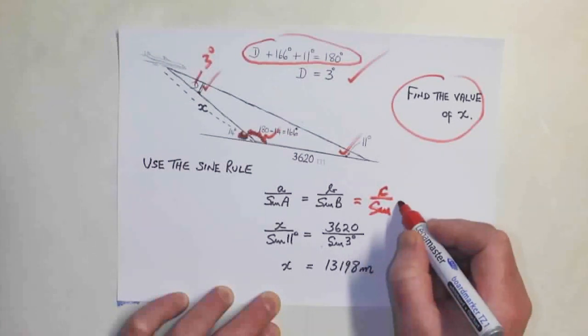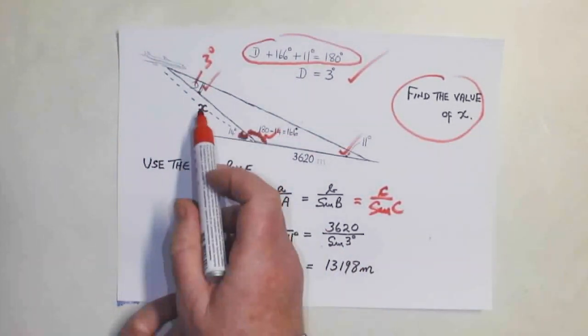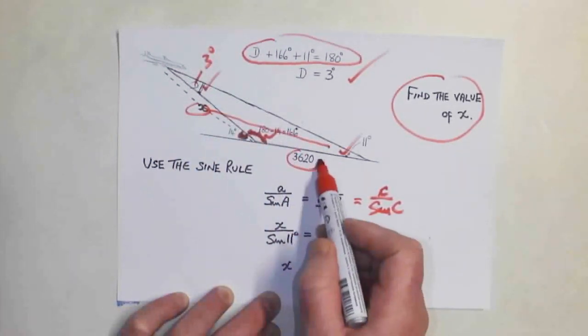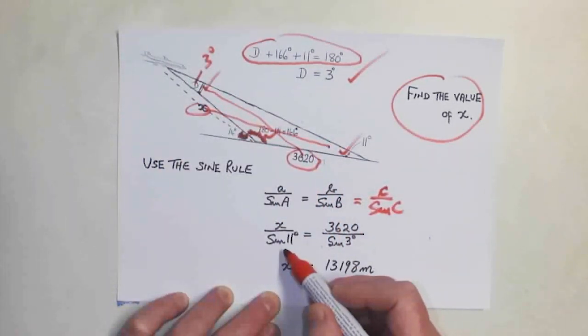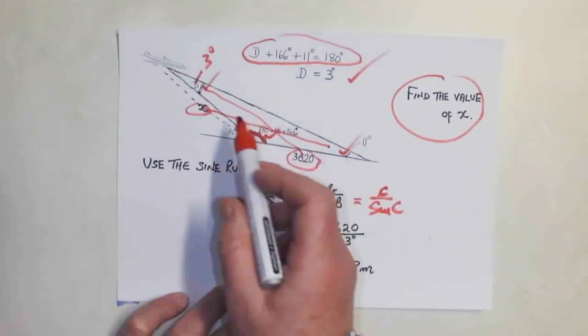So then it's x over the sine of 11. x over the sine of 11 equals 3620 over the sine of 3 degrees.